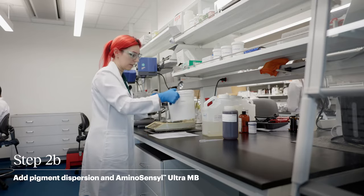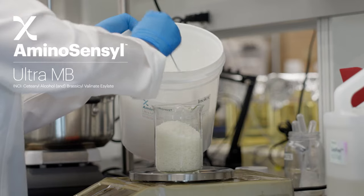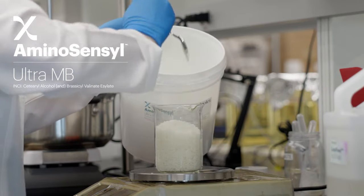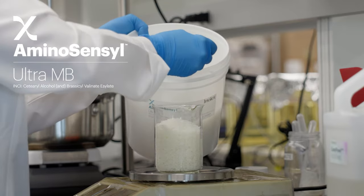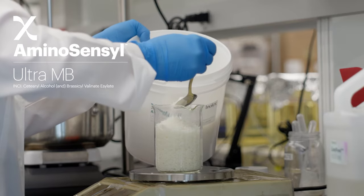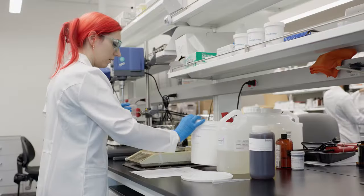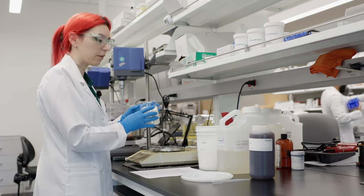So the next thing we'll add is our Aminosensil Ultra MB. We're going to measure this out in a beaker. In this formulation, we're using 8% Aminosensil Ultra MB, which is about 160 grams. And we're just going to add this directly into our formula.